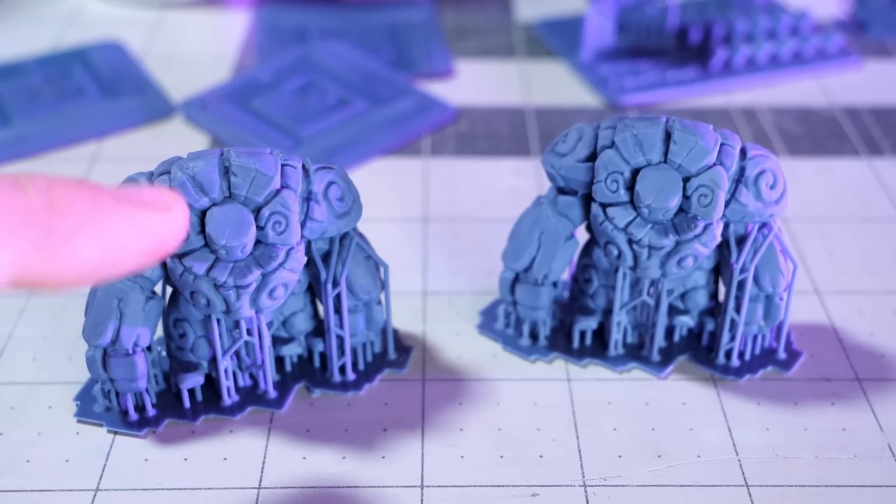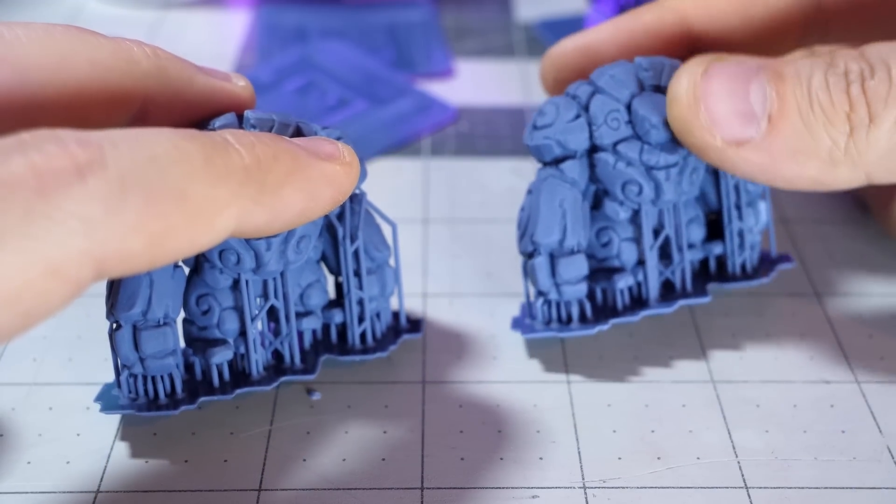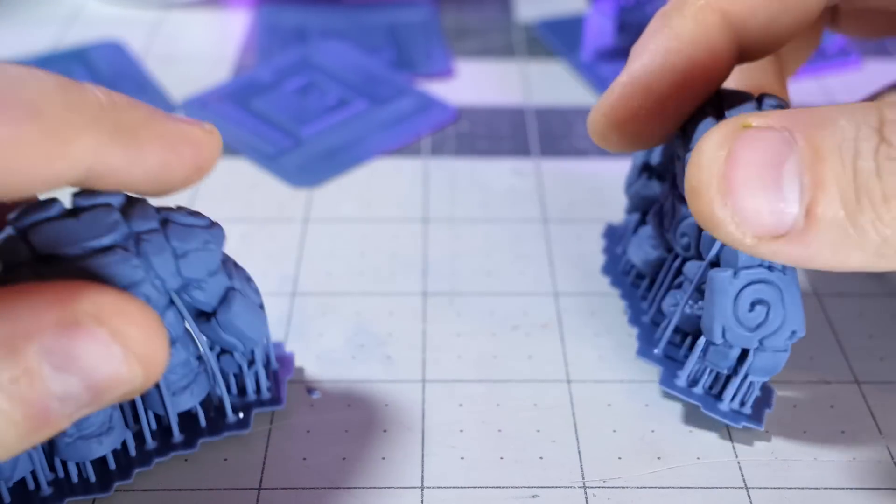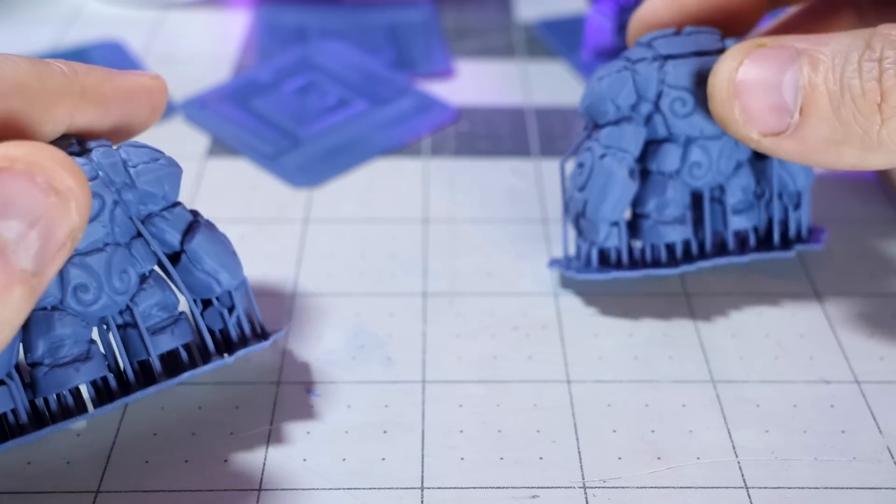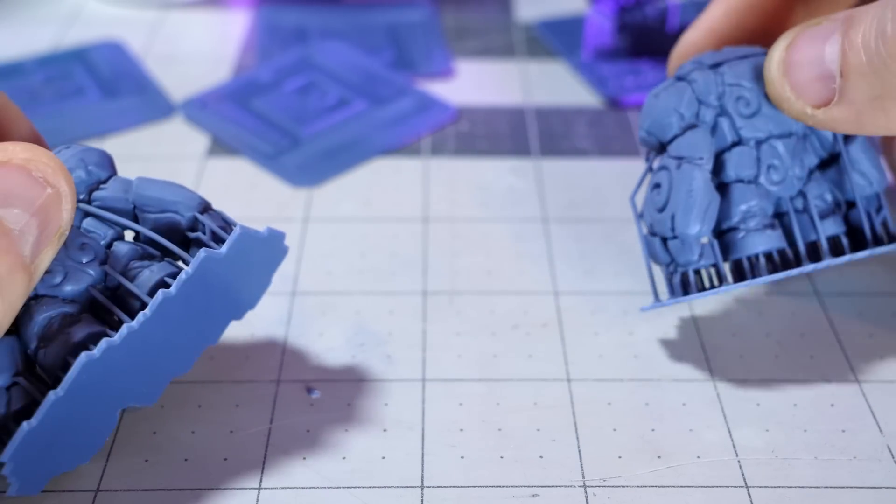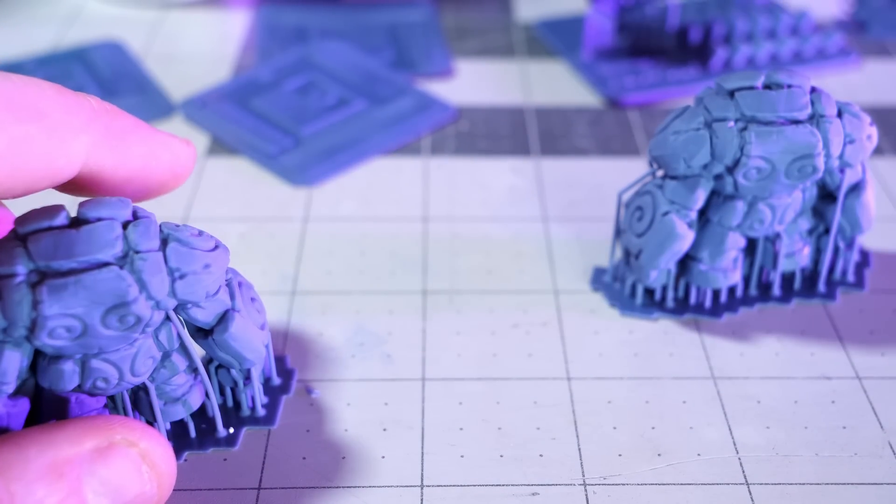Both the second and third ones printed fine upon first look. This model is not ridiculously detailed, so subtle differences might not be too obvious unless you look at them really closely or under a microscope. However, have a listen to the difference in the sound support removal makes with both.